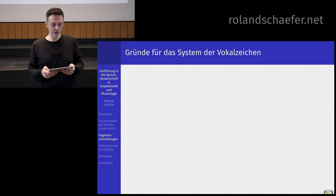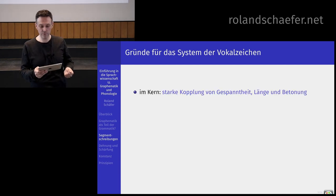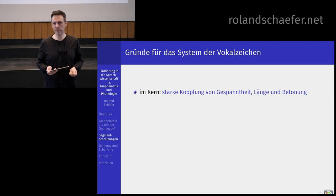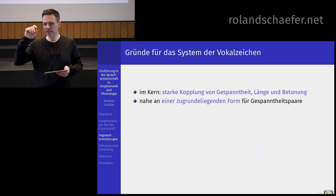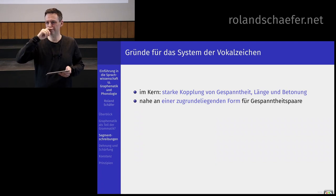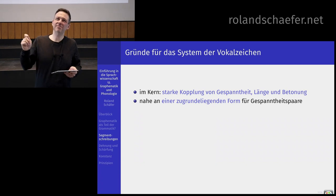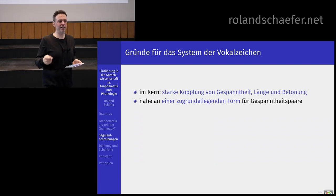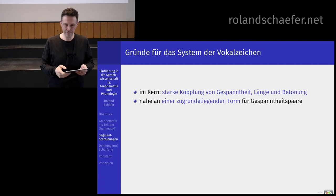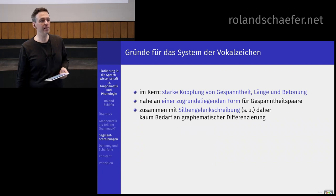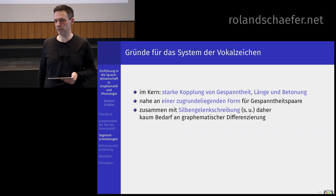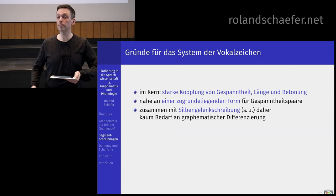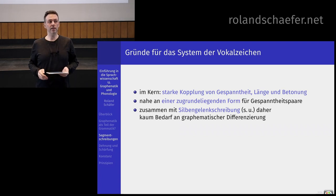Ich habe eben gesagt, ich kann Ihnen vielleicht Gründe nennen, warum das mit den Vokalzeichen so geworden ist. Im Kern haben wir eine starke Koppelung von Gespanntheit, Länge und Betonung. Das hängt zusammen. Das heißt, wenn wir die Länge und die Betonung noch dazu haben, dann können wir tendenziell fast die Gespanntheit ausrechnen – gerade im Kernwortschatz. Und zusammen mit der Silbengelenkschreibung, die ich Ihnen gleich zeige, haben wir für ganz viele Fälle kaum mehr den Bedarf an der grafematischen Differenzierung.